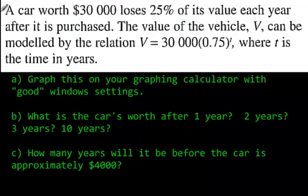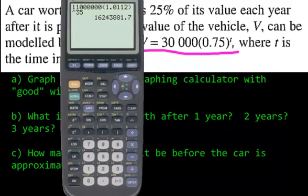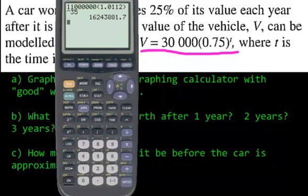One more question. A car, this is a car. Hopefully, that grabs your attention for those of you that want to be driving. A car that's worth $30,000 loses 25% of its value each year after it is purchased. Very real life. The value of the vehicle, V, can be modeled by the relation. So, here is the equation, where T is the time in years. It says graph this on your graphing calculator with good window settings. Well, let's do it. I'm going to move the calculator over so we can see it. And here we go.